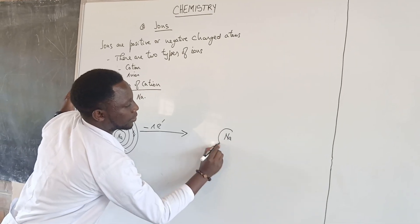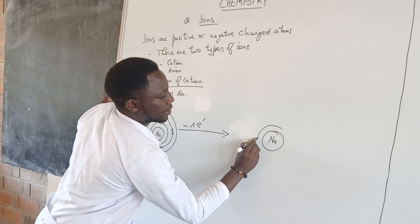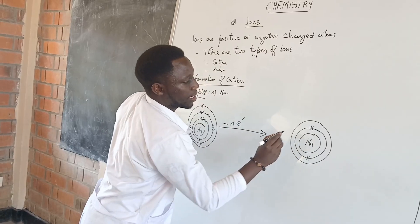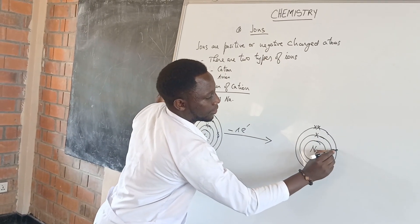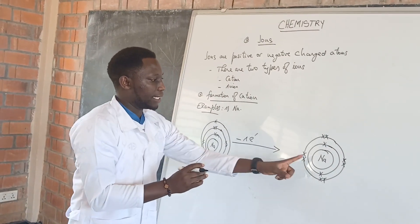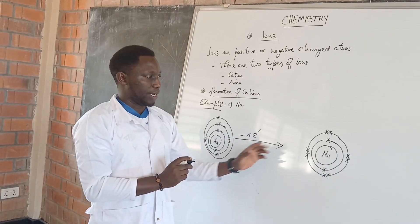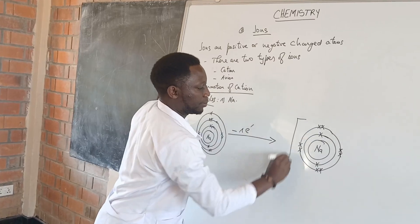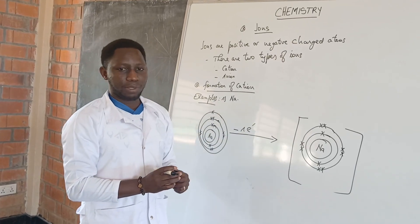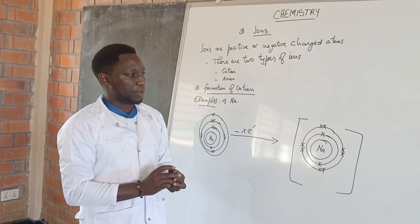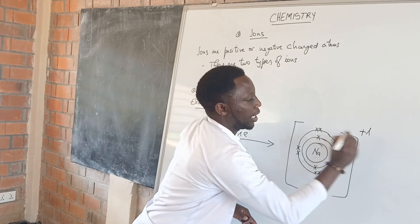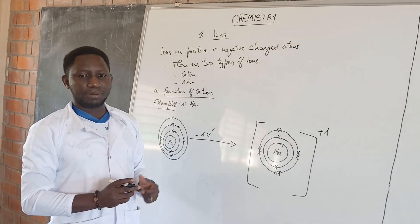Sodium — this is the nucleus. The first shell contains two. The second, which is the last here, contains eight: two on each side. Remember, this sodium loses one electron and then has 10. That's why we put a bracket to show how sodium loses that electron. Sodium is number 11, not number 10 on the periodic table, so we show the electron it loses. We add the positive charge notation to show how it becomes a cation. Remember, cation is a positively charged atom.